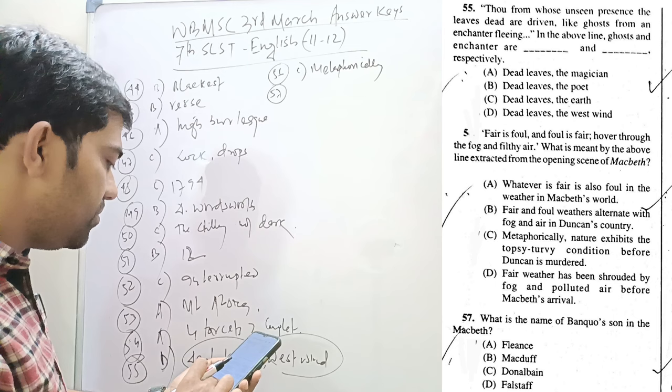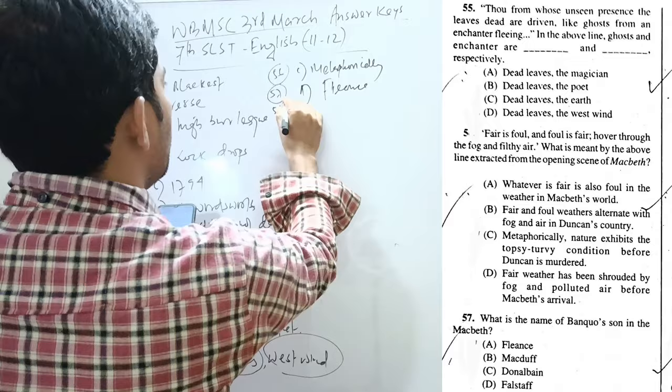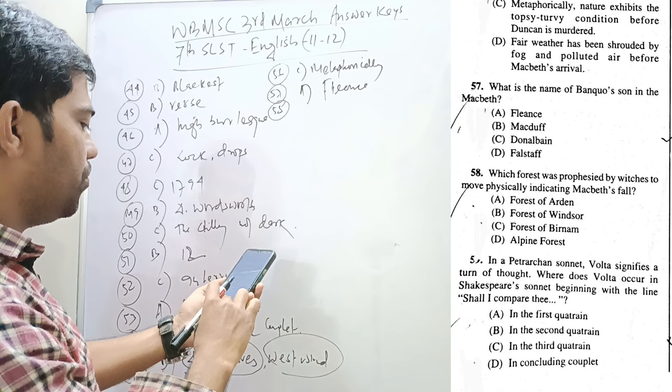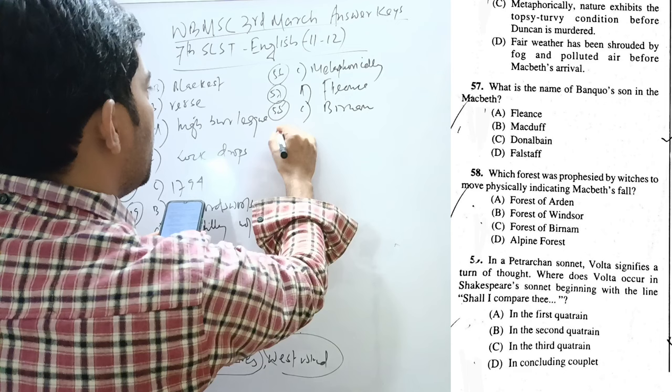What is the name of Banquo's son in the Macbeth? It is Fleance. Common question, direct question. Question 58. Which forest was prophesied by witches to move physically indicating Macbeth's fall? Forest of Birnam. Birnam from Dunsinane and Birnam.